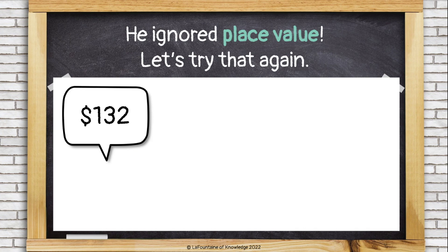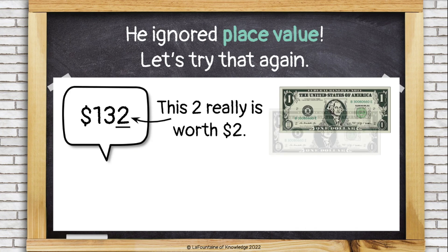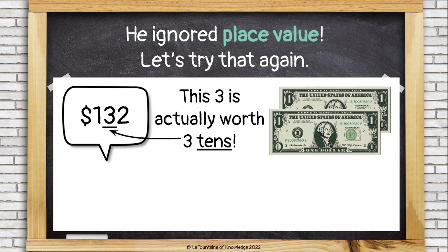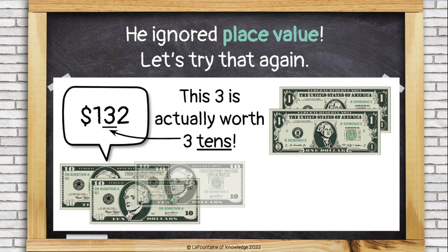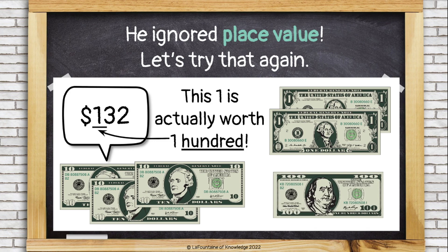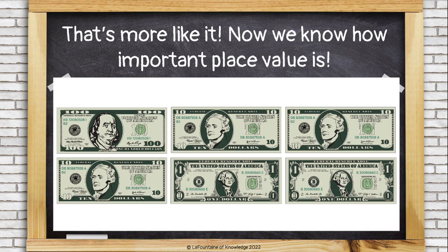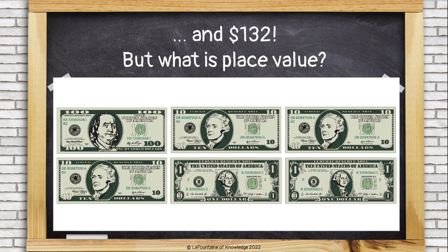Let's try that again. This two really is worth $2. This three is actually worth three tens. This one is actually worth 100. That's more like it. Now we know how important place value is — so important, it's the difference between $6 and $132.